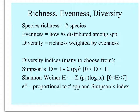Remembering that true diversity is species richness weighted by evenness, ecologists have come up with a variety of diversity indices. Some favorites are Simpson's D, which equals 1 minus the sum of the squared proportions of all species — with a D value between 0 and 1 — and Shannon-Wiener H, which is the sum of each species' proportion times the natural log of its proportion, ranging from 0 to 7. With all of these, the larger number means more diverse.